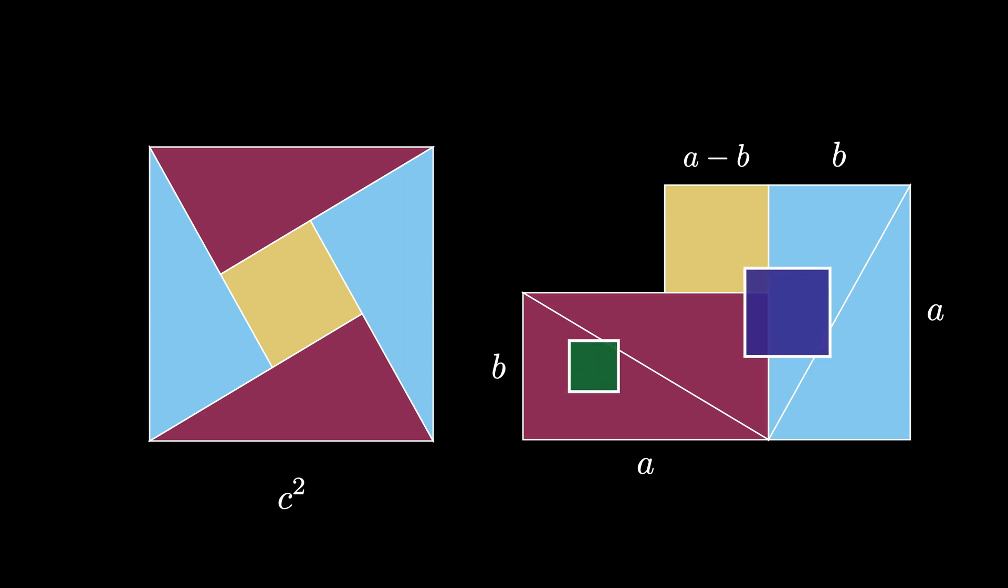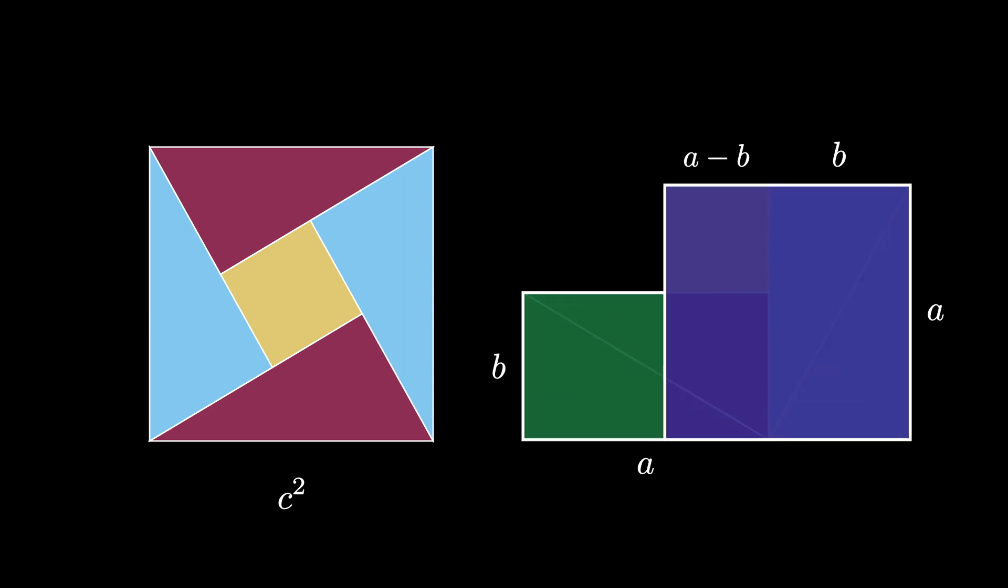Now if we change our point of view, we see that there are actually two squares that fill this diagram. The squares have a side length of B and a side length of A. Therefore the total area covered by the diagram is A squared plus B squared.